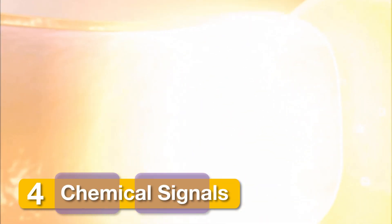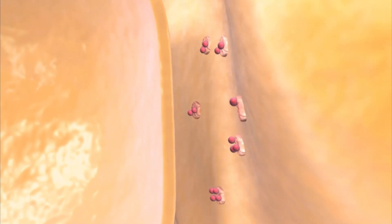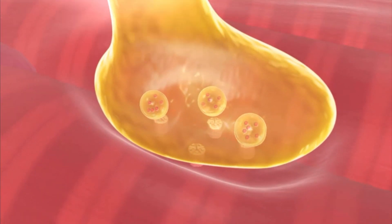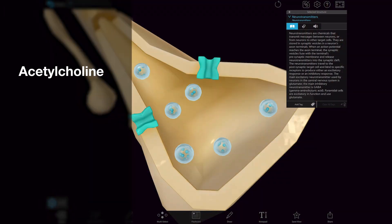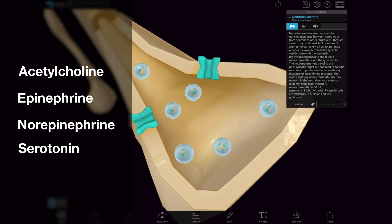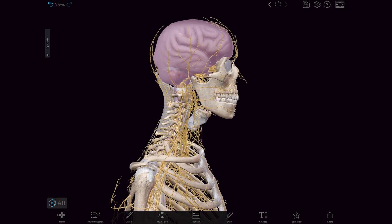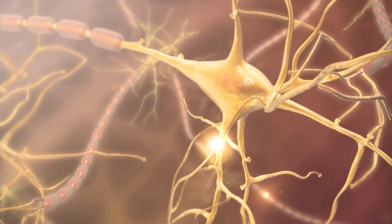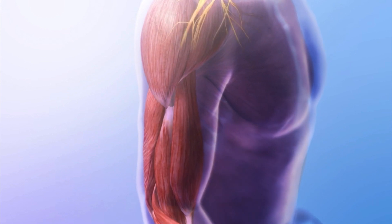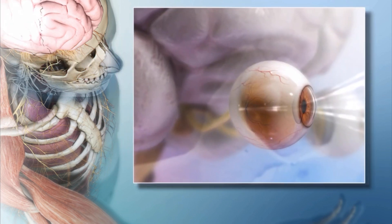When an electrical signal reaches the axon terminal of a neuron, it stimulates the release of special chemicals called neurotransmitters. These travel across synapses to other neurons or to target cells, stimulating or inhibiting signals and responses. Acetylcholine, epinephrine, norepinephrine, and serotonin are among the most common neurotransmitters. Some are more prominent in certain parts of the nervous system because they specialize in carrying messages within the brain or between neurons and muscular tissue or other types of tissue. These chemicals are key to the nervous system's regulation of body movement and internal functions.